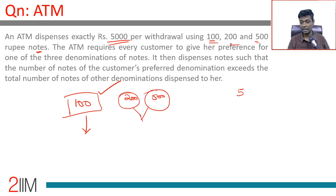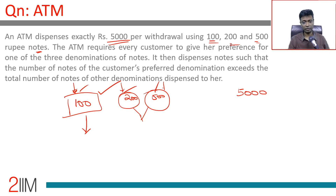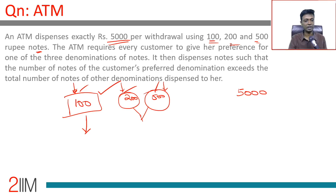So everybody gets exactly ₹5,000; there are only three denominations — 100, 200, 500. The customer gives one preferred denomination, and the number of notes of that denomination will be more than the sum of the other two put together. For those who have just seen the question, hit pause and try all the questions before watching further.